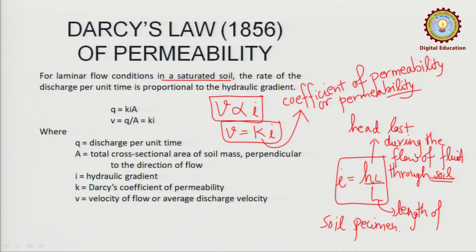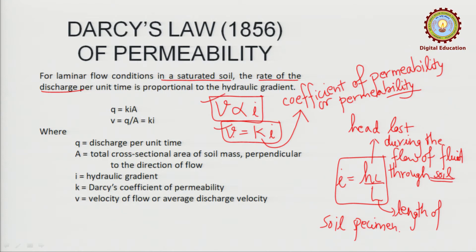This was the main law that Darcy gave. Later it was modified, from which we obtained K — the coefficient of permeability, or simply permeability. You know that Q (discharge) equals A into V, where A is the area through which the fluid is flowing and V is the rate of discharge.